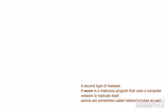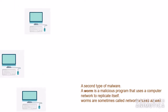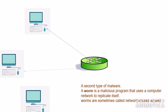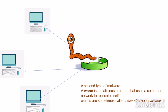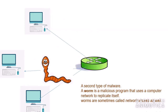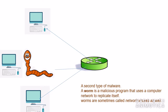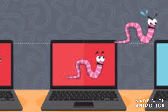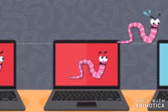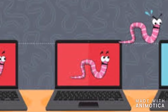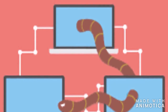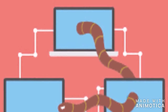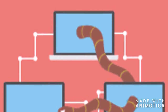The second type of malware is a worm. A worm is a malicious program that uses a computer network to replicate itself. Worms are sometimes called network viruses. A worm is designed to enter a computer through a network — when a worm email is opened on one host computer, the whole network can become infected. A worm self-replicates from one computer to another via a network.